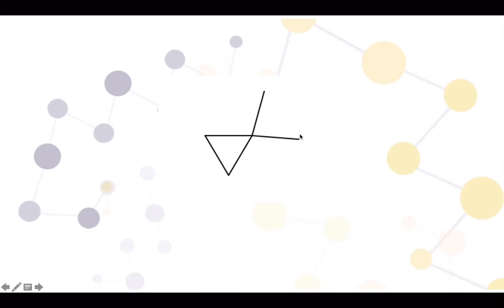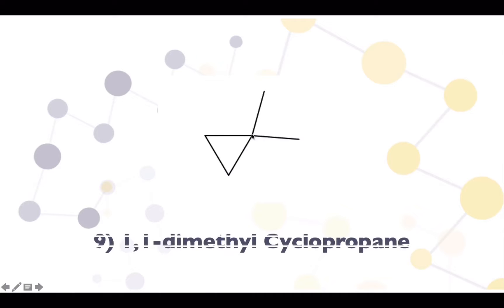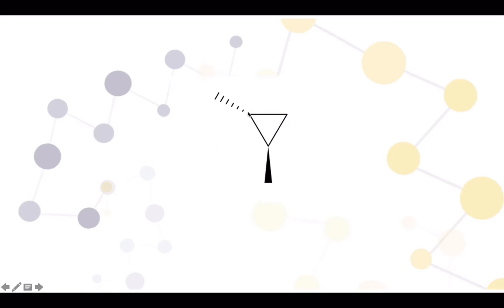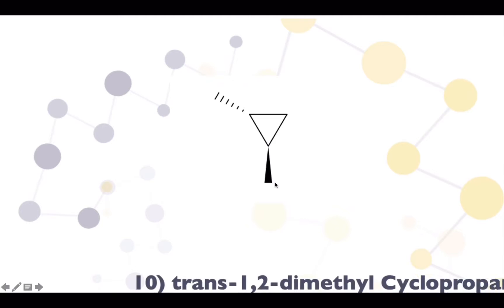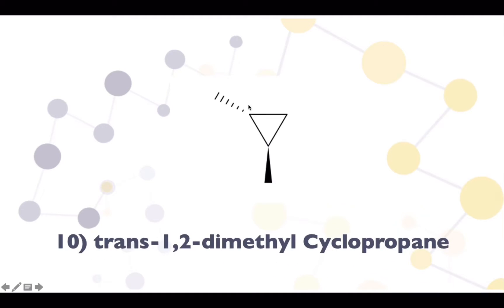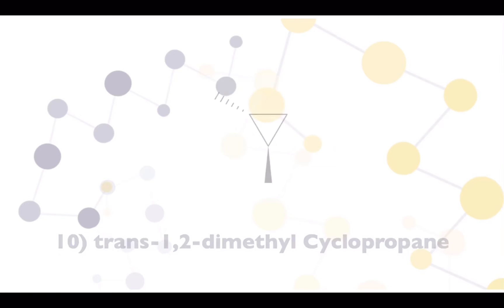Then we get a three-membered ring (triangle) with two methyl groups on the same carbon, and we name it 1,1-dimethylcyclopropane. Next, there is a structure where the atoms are placed on different vertices of the triangle, so we name it trans-1,2-dimethylcyclopropane.